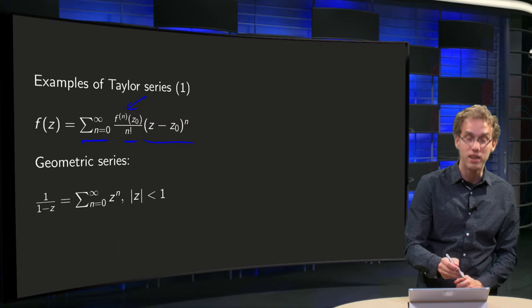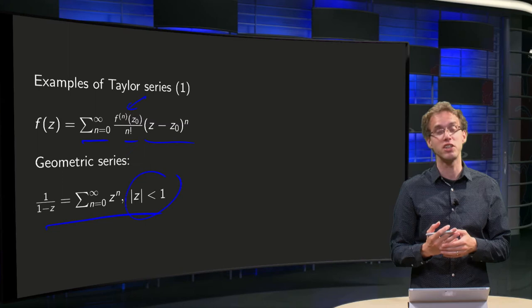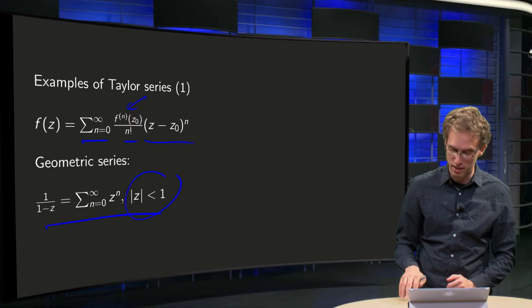Fortunately, we have some known series, like geometric series: 1/(1-z) equals sum n from 0 to infinity z^n, provided |z| < 1. And we can use this geometric series to find some Taylor series of other functions, just as we did in the real case.